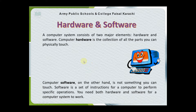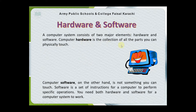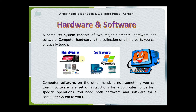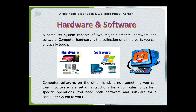A computer system consists of two major elements: hardware and software. Computer hardware is the collection of all parts you can physically touch. Computer software, on the other hand, is not something you can touch. It means you cannot touch the software, but hardware you can touch. Software is a set of instructions for a computer to perform specific operations. You need both hardware and software for a computer system to work.